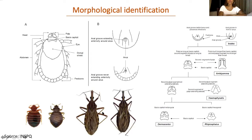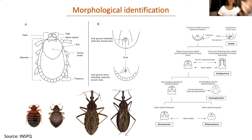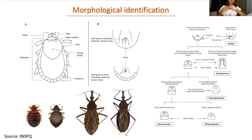Here are four different bugs — two different triatomids on the right and two different bed bugs on the left. If you have no entomological background, it's very difficult to know what to look at to differentiate all four insects. And even if you do have entomological training, if you have 500 of these specimens, at some point you get tired and might make mistakes.